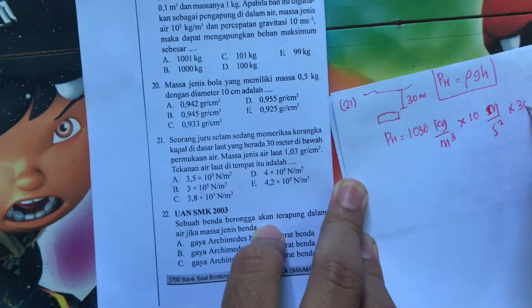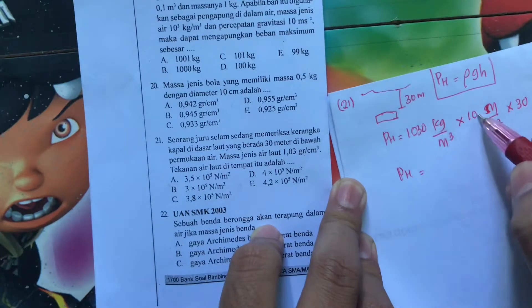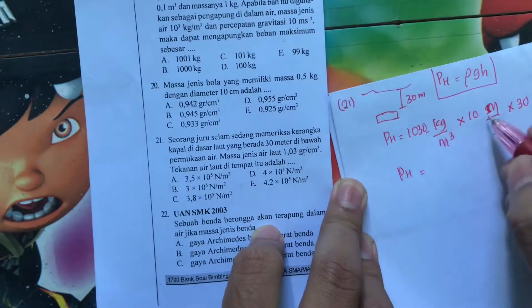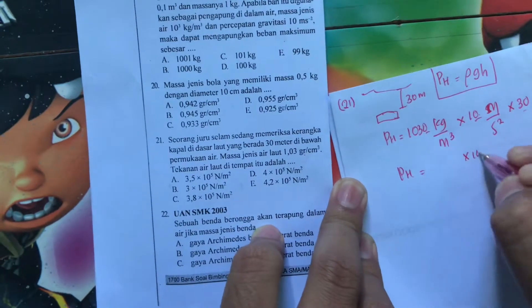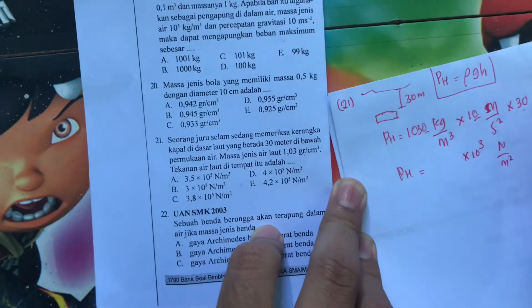Kedalamannya berapa? 30. Yaudah, berarti tekanan hidrostatisnya, nolnya kita kumpulin, berarti ada 3 kan nolnya? 1, 2, 3. Berarti kali 10 pangkat 3. Satuannya apa? Newton per meter persegi.